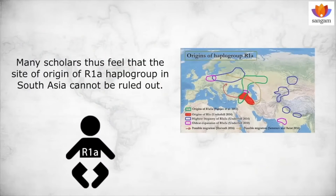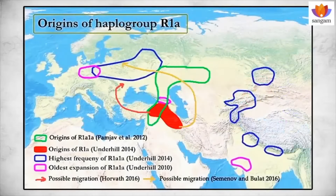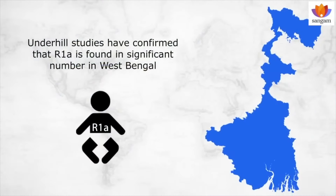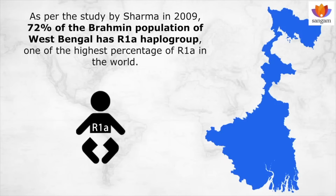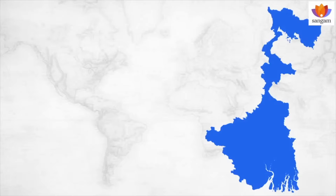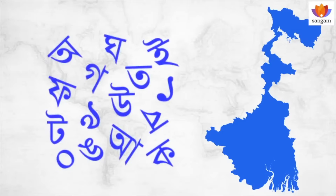Many scholars thus feel that the site of origin of R1-alpha haplogroup in South Asia cannot be ruled out. Though Bengal is not shown as one of the important sites harboring R1-alpha in that map, almost all studies including the Underhill studies have confirmed that R1-alpha is found in significant numbers in West Bengal. In fact, as per the study by Sharma in 2009, 72% of the Brahmin population of West Bengal has R1-alpha haplogroup — one of the highest percentages of R1-alpha in the world. Moreover, Bengali language not only belongs to the Indo-European language branch, but it has a significant component of Sanskrit and Prakrit, two of the oldest languages of the group.